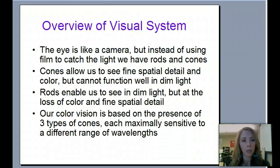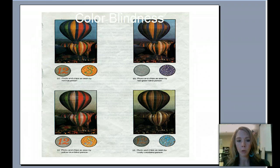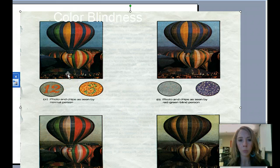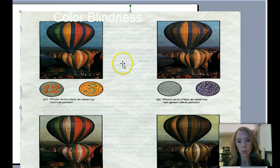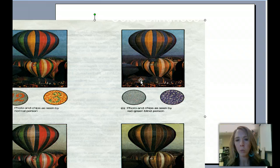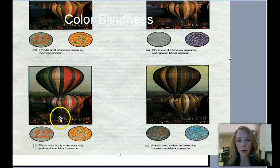Let's look at the different types of colorblindness. Someone with completely normal vision will see a balloon image in all its different colors and can see the numbers 12 and 3. A red-green blind person sees the same scene differently — it's the most common type of colorblindness. They still see colors, but they're not perceiving the reds and greens the way a normal-vision person would, and the numbers may be very difficult to make out.